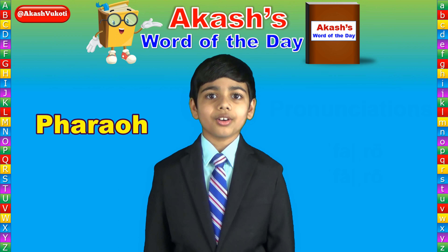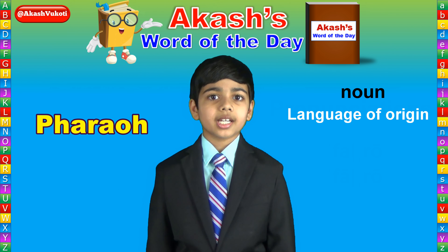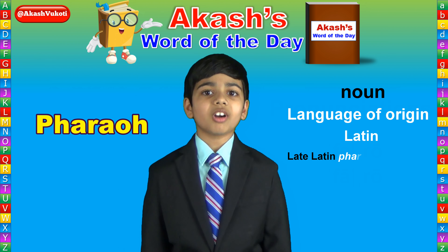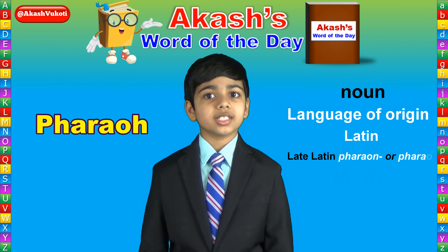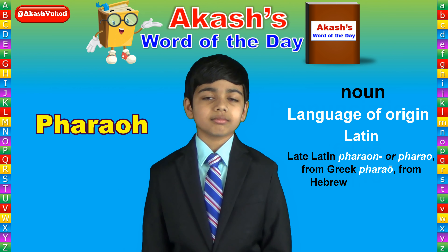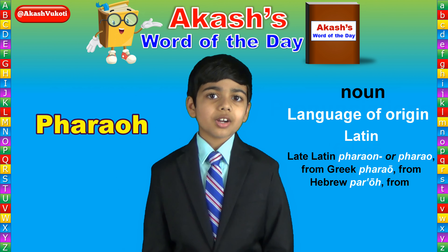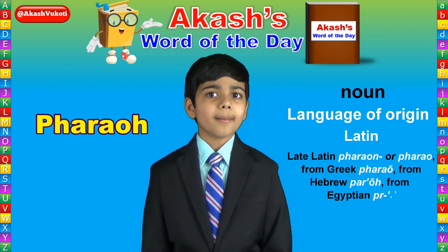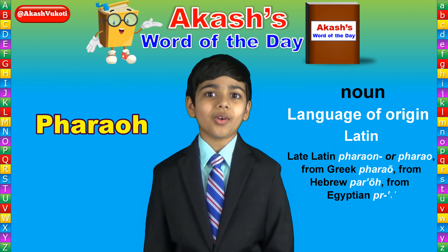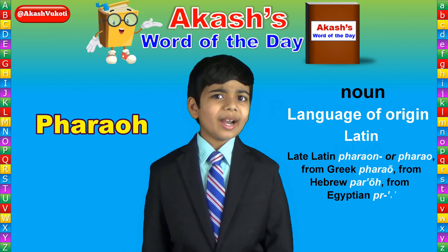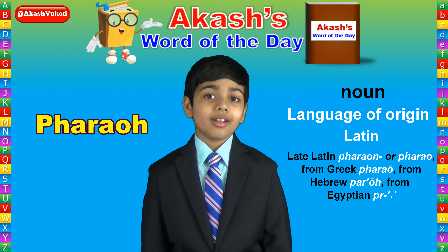Pharaoh is a noun that derives from late Latin Pharaon, Pharao, from Greek Pharao, from Hebrew Paro. And eventually, Pharaoh comes all the way back to Egyptian Purr. Egyptian Purr goes over time to become the rather complex word Pharaoh.